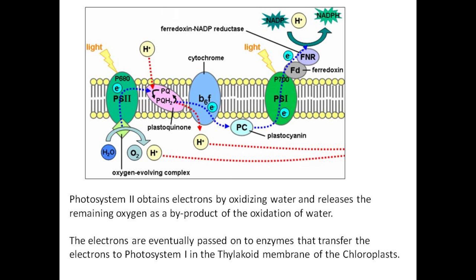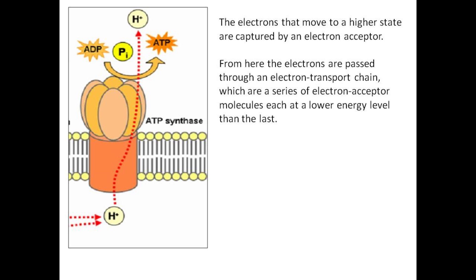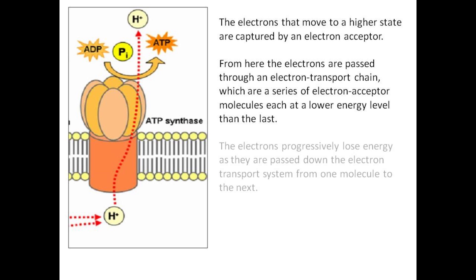The electrons are passed on to enzymes that transfer them to photosystem I in the thylakoid membranes of the chloroplasts. The electrons that move to a higher state are captured by an electron acceptor, then passed through an electron transport chain — a series of electron acceptor molecules, each at a lower energy level than the last. The electrons progressively lose energy as they are passed down the electron transport system from one molecule to the next.